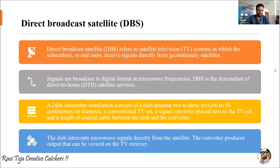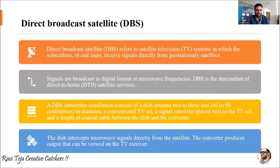Welcome to the course on satellite communications. In today's session we are going to learn about Direct Broadcast Satellite — in short, DBS. A direct broadcast satellite refers to a satellite television system in which subscribers or end users can receive signals directly from geostationary satellites.